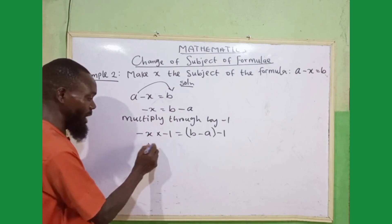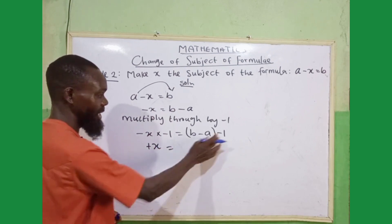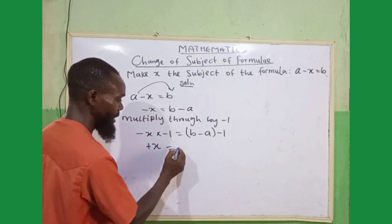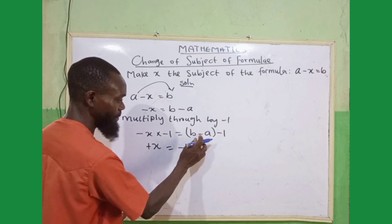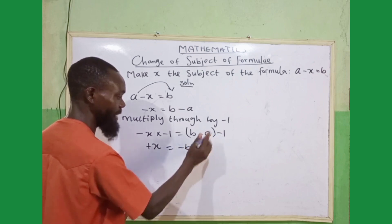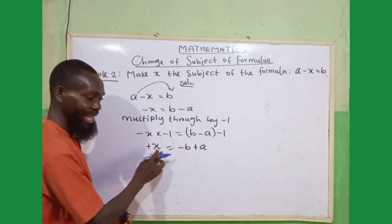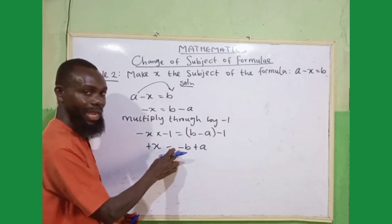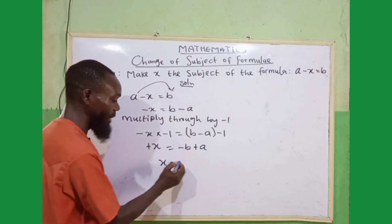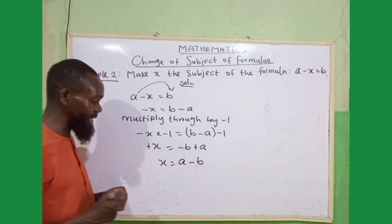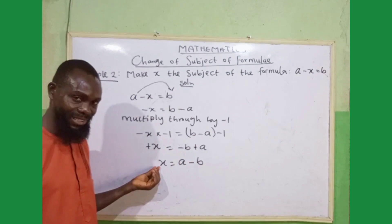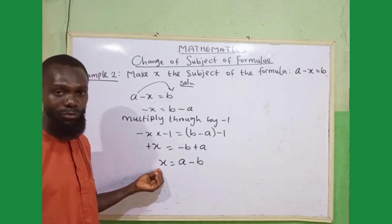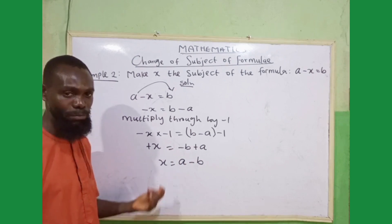Minus and minus, we have plus, x times one, we have x, is equal to. Now here, I can open this bracket by saying, minus one times b, minus b, minus and minus, plus, one times a, we have a. Now, x is equal to. I can rearrange this one so that minus will not show at the beginning of this equation, I will have a - b. If you now see it now, I have made my x the subject of the formula, minus is no more there, it is having positive x equals to a - b.